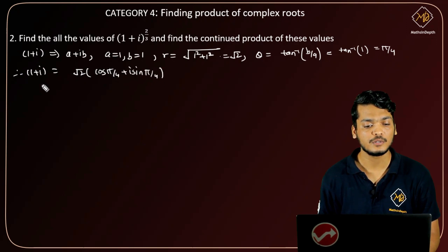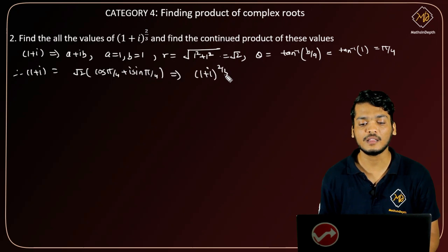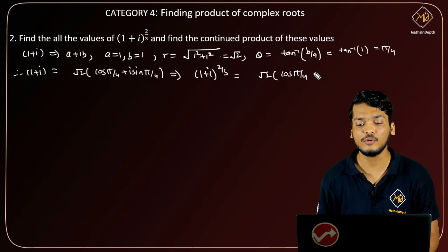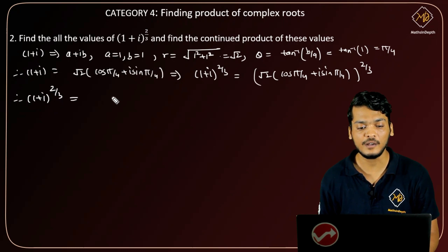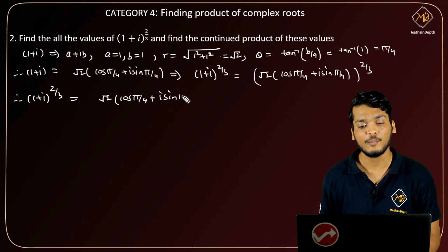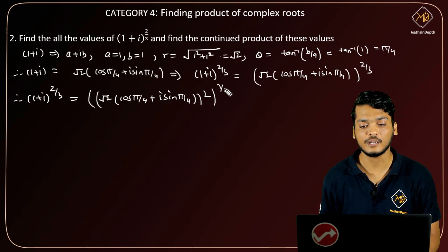Therefore (1+i) can be written as √2 · (cos(π/4) + i·sin(π/4)). This implies that (1+i)^(2/3) equals √2 · (cos(π/4) + i·sin(π/4)) raised to 2/3, which can be rewritten as [√2 · (cos(π/4) + i·sin(π/4))²] raised to 1/3.